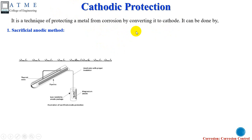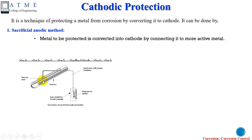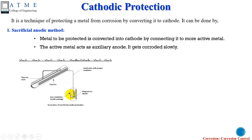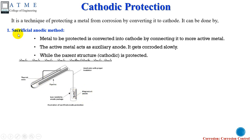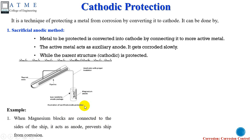There are two types of cathodic protection: the sacrificial anode method and the impressed current method. In the sacrificial anode method, the base material is connected to a more active metal. For example, an iron pipe buried inside soil is connected to a more active metal such as magnesium. Magnesium behaves as an auxiliary anode because it has a lower standard electrode potential (E⁰) value than iron — so it becomes the anode and undergoes corrosion, while the base material acts as the cathode and is protected. Since the metal sacrifices itself to protect another, this method is called the sacrificial anode method. An example is magnesium blocks connected to the sides of a ship.